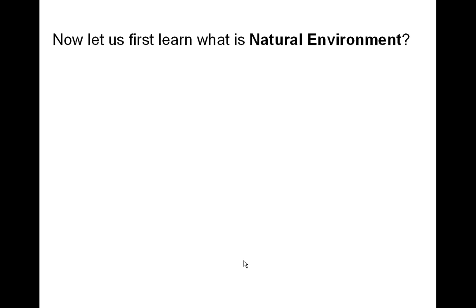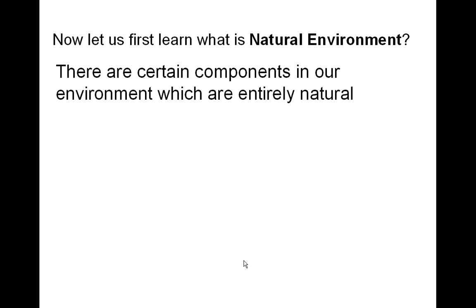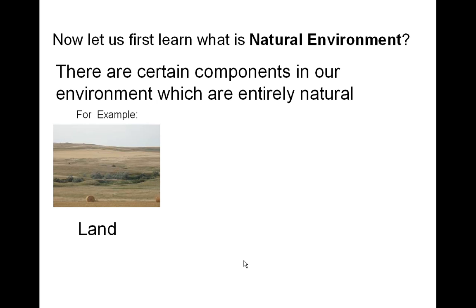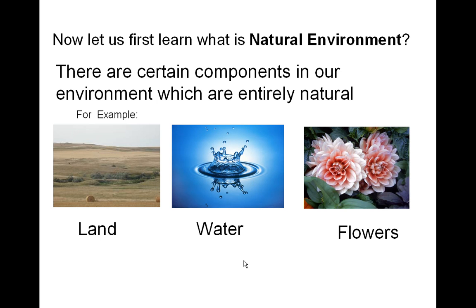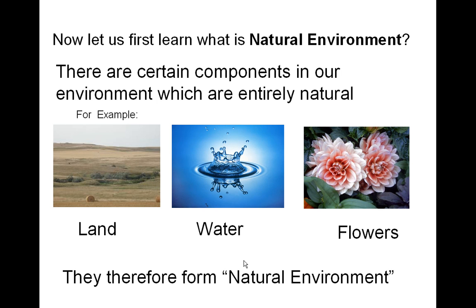Let us first learn what is natural environment. There are certain components in our environment which are entirely natural — for example, land, water, and flowers. These form the natural environment. So things which are entirely natural form the natural environment.